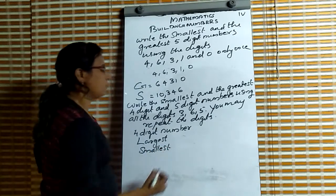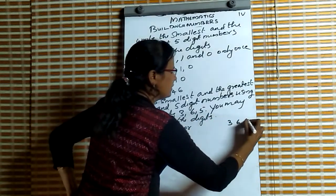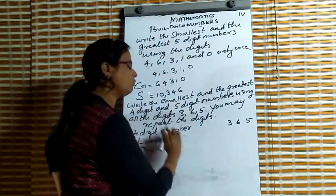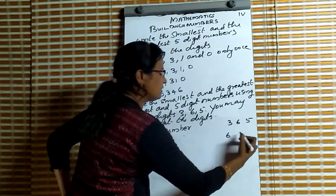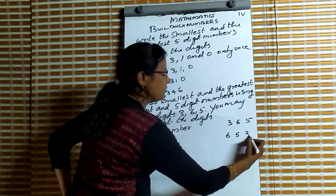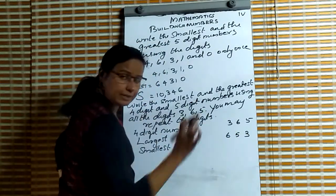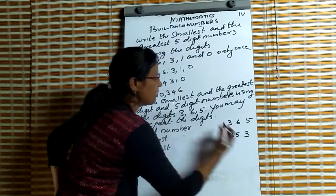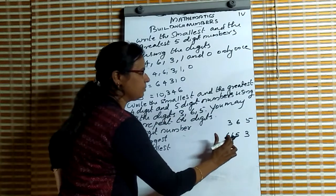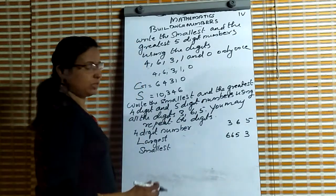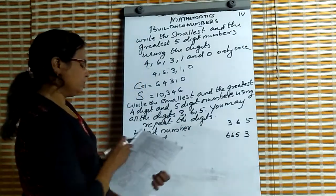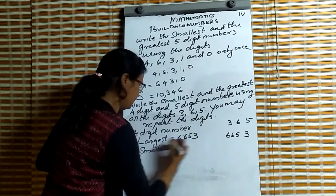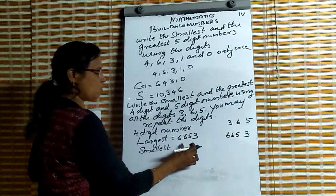Which is the largest? We have 3, 6, 5. In the largest 4-digit number, we use 6 first, then 5, then 3 — but that is only 3 digits. Since you may repeat the digit, we repeat 6 to make it 4 digits. So 6653 is the largest 4-digit number.